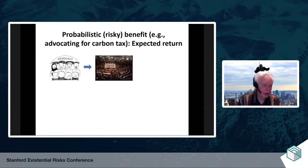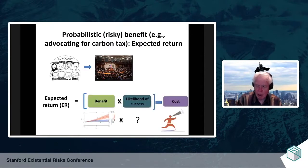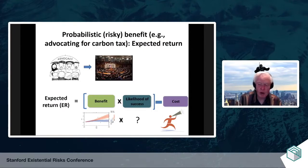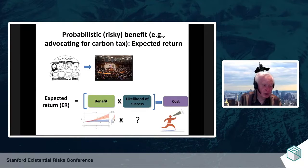What happens when you're thinking about probabilistic benefits? For example, you're advocating — as we did when I was at the Hewlett Foundation — supporting organizations advocating for a carbon tax, where the results are anything but certain. In that case, you discount the benefit by the likelihood of success. It could be that in the case of that advocacy work, you might estimate there's a 10% chance of succeeding. So no matter how great the benefit is, ex ante you really can only expect 10% of that.